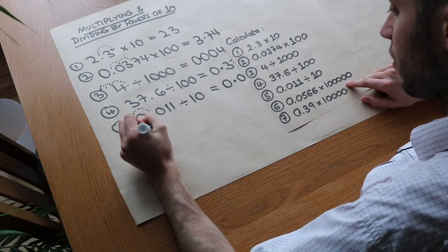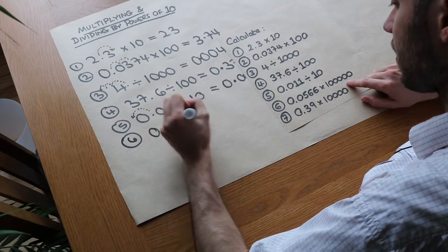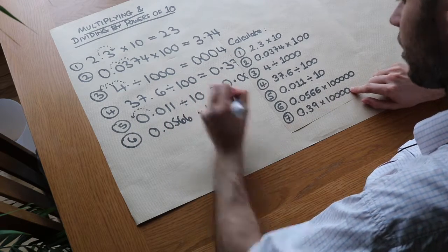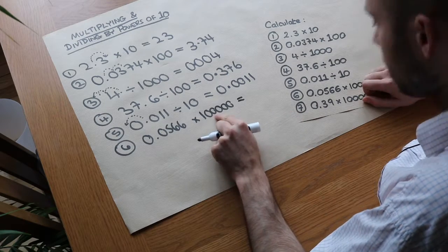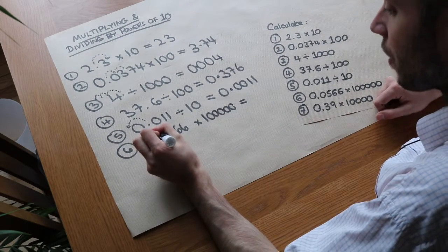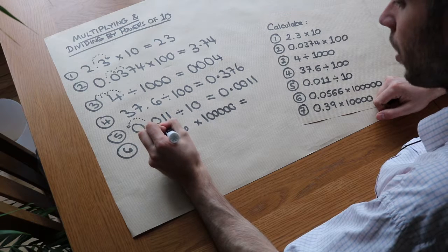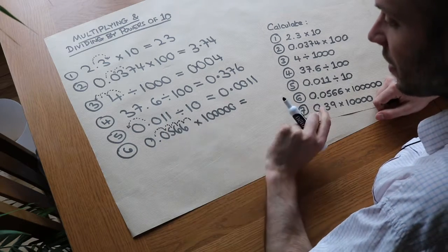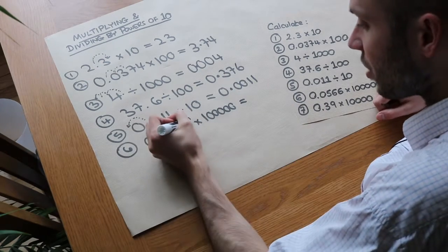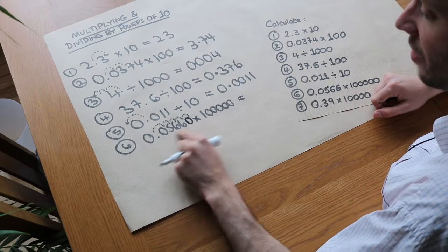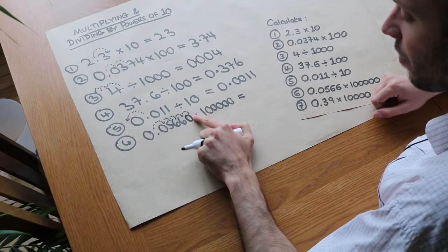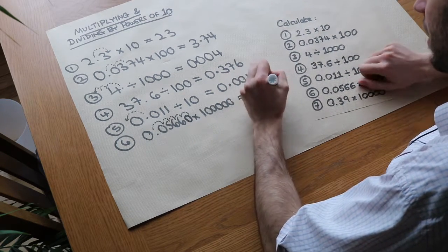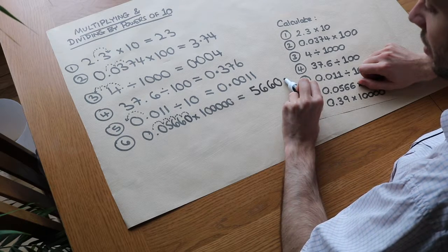Next, 0.0566 multiplied by 100,000. How many zeros? 1, 2, 3, 4, 5 — so the decimal point moves five places to the right. We seem to run out of digits, so we can just add a 0 at the end — that doesn't change the number. The decimal point ends up just after that 0, giving us 5,660.